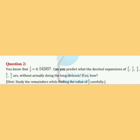Good morning students. Now question number two: You know that 1/7 equals 0.142857 bar. Can you predict what the decimal expansion of 2/7, 3/7, 4/7, 5/7, and 6/7 are without actually doing the long division? If so, how?